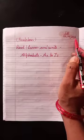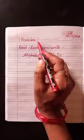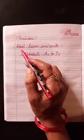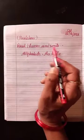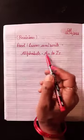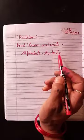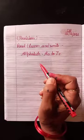So, write CW and date. Revision. Heading. Read, learn and write. Alphabets. A to Z. Capital and small letter.